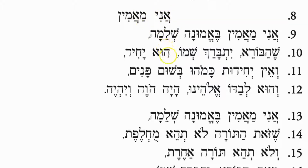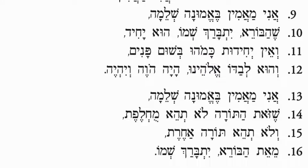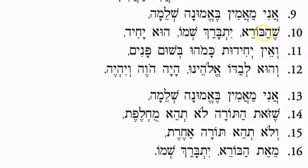If there's anything akin to a creedal statement in Judaism besides the Shema Yisrael, it would be the Ani Ma'mins. We'll look at a few of them. Line nine: Ani ma'amin be'emunah shleimah — I believe with complete faith. Shehaboreh yitbarach shmo — that the Creator, may his name be blessed.